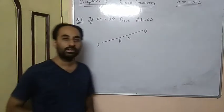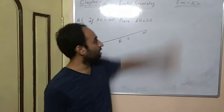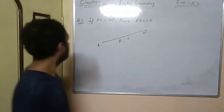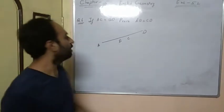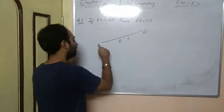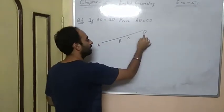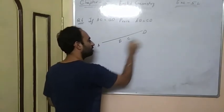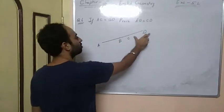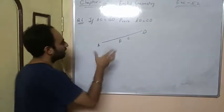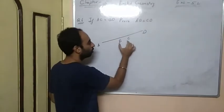Hello students, how are you all? Now we are going to discuss Chapter 5, Euclid Geometry, Exercise 5.1, Question number 6. It is given: AC is equals to BD. Then prove that AB is equals to CD.